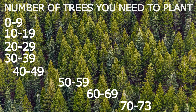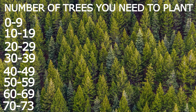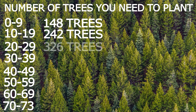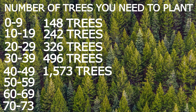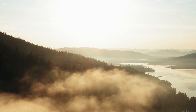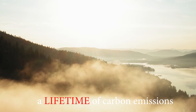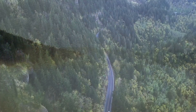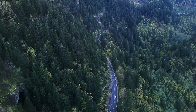This leads into actually calculating how many trees any given person will need to offset their carbon footprint. I have this separated into age ranges. If you're between 0 and 9, you need to plant 148 trees; 10–19: 242 trees; 20–29: 326; 30–39: 496; 40–49: 1,573; 50–59: 2,696; 60–69: 9,436; and if you're 70–73, I'm sorry, but 34,300 — which is also the amount of trees you need to plant to offset a lifetime of carbon emissions in just one year. This range takes the higher end of each bracket, so if you want a more exact number, the next part will tell you how to do that.